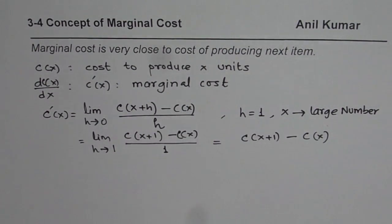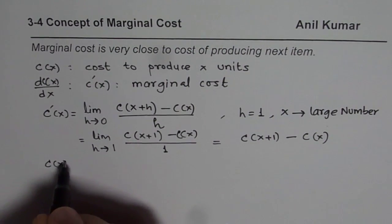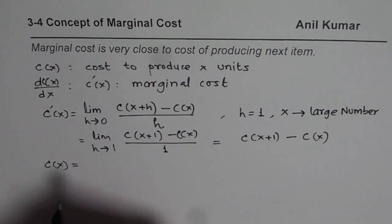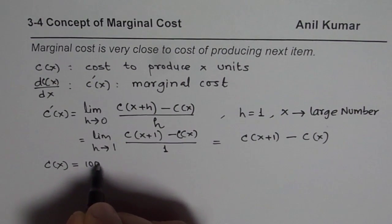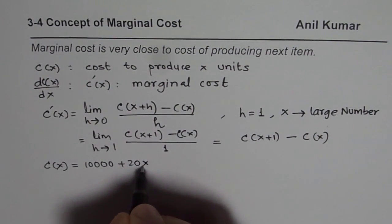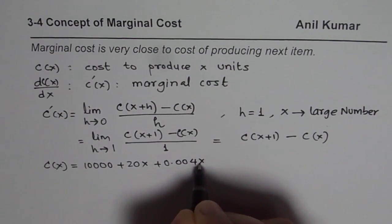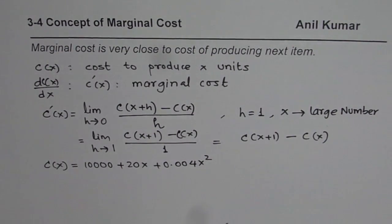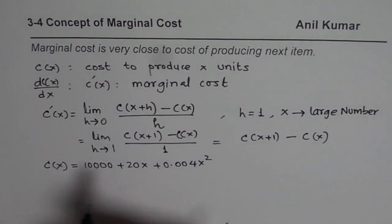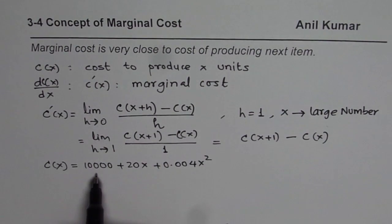Let us take some examples to understand. You are given a cost function: C of X equals 10,000 plus 20X plus 0.004X squared. This is your cost function. Then you need to find what is the marginal cost for producing 1,000 items.